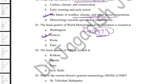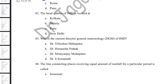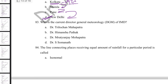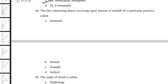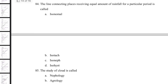The headquarters of IMD (India Meteorological Department) is in New Delhi. It was initially established in Kolkata in 1875, then shifted to Shimla, then Pune, and now New Delhi. The current Director General of Meteorology (DGM) of IMD is Dr. Mrutyunjaya Mohapatra. The imaginary line connecting places receiving equal rainfall for a particular period is called an isohyet.